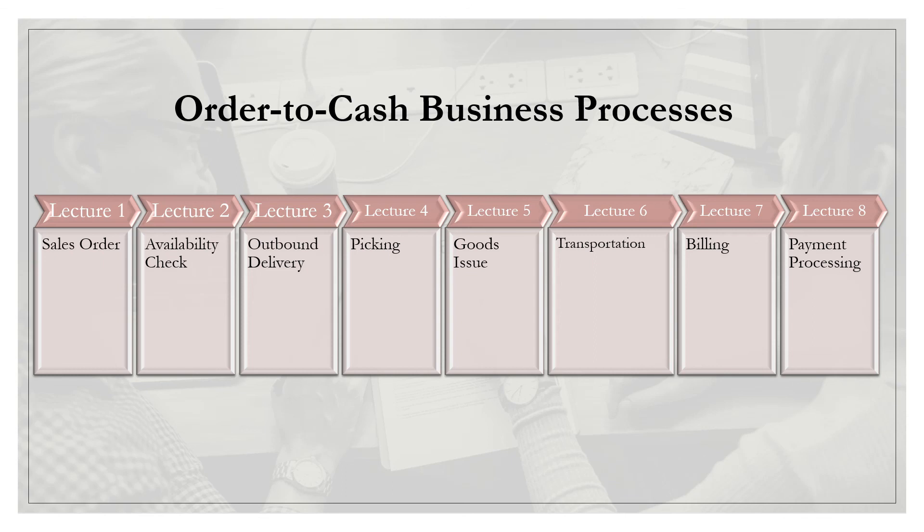This wraps up Lecture 7 — billing of Order-to-Cash Business Processes. We're almost there. We have one more step to go, which is payment processing. That should be Lecture 8, and that should finish up the entire Order-to-Cash Business Processes.